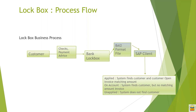The bank sends the file through some middleware and that file is received in AL11, the SAP drive. Just as we have a folder for EBS, we have a folder for lockbox — an incoming file folder. Whatever file the bank sends will get stored automatically into that drive. We have two options: we can manually pick that file and process it, or we can set up a background job so that whenever a file comes into the folder, it is automatically processed by the system. After processing, the file gets transferred from the active folder to the archive folder.